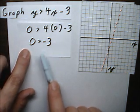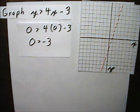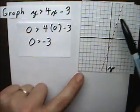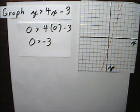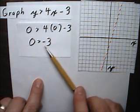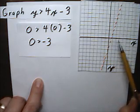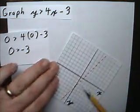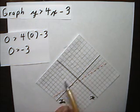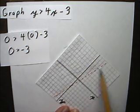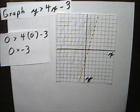0 is greater than negative 3. That means that the point 0, 0 is part of the solution, and everything to the left of the line is part of the solution. If I got something that was false, that would mean that 0, 0 is not part of the solution, and it would be everything to the other side of the line. So now I need to shade everything to the left of this line, and that is my solution. That's the graph.